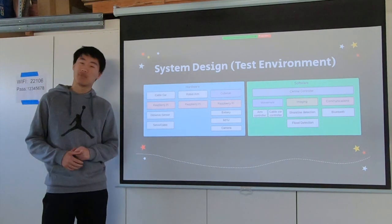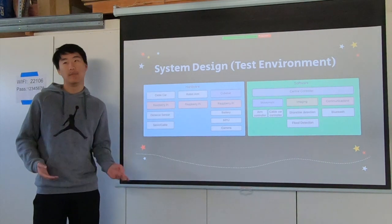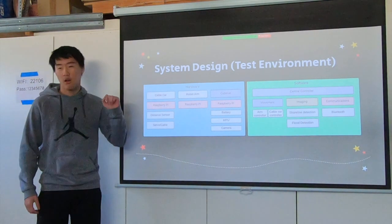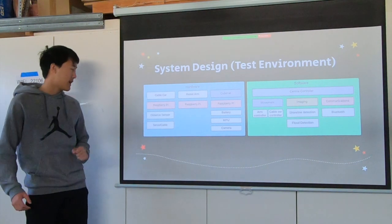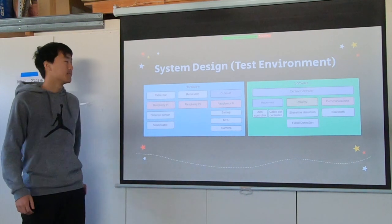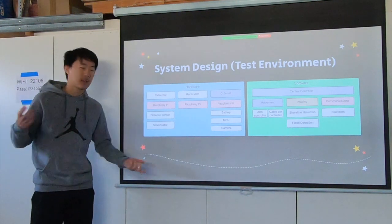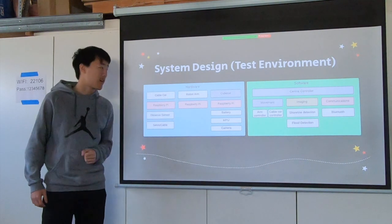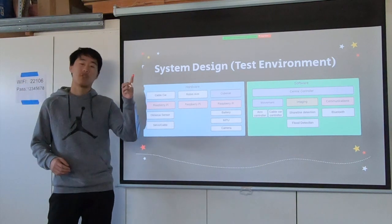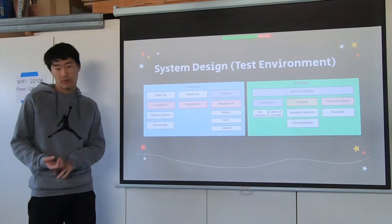Our system design for the test environment looks a little different from our idealistic space environment. We have our cable car, robotic arm, and CubeSat, all controlled by Raspberry Pis. The cable car has a distance sensor to control it more easily. Our CubeSat will have its typical components: battery, Raspberry Pi, MPU, camera, and thermals. The software is not very different from the space environment — we don't have the full altitude determination control system, but we have a robotic arm interface and cable car interface, along with shoreline detection, flood detection, and Bluetooth communications.